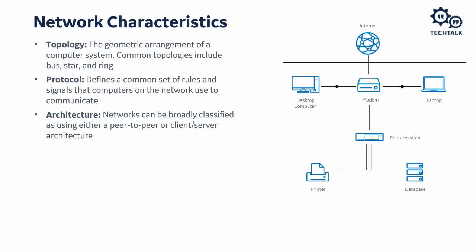Networking topologies describe how the network is arranged, including the physical and logical description of how the network links and devices are set up in relation to each other. There are numerous ways a network can be arranged, all with different pros and cons, with some being more useful depending on the application. Networking devices and nodes share information using standard, non-standard, or proprietary protocols — these are the common rules, syntaxes, semantics, synchronization of communication, and error recovery methods.